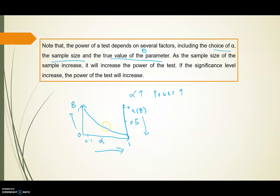If our alpha is increasing — say alpha is 0.9 — then the power of the test approaches 1, while beta gets smaller. But when beta, the probability of making a Type II error, approaches 1, the power of the test approaches 0. So the power of the test is again the probability of not making a Type II error. We will look at how to compute the power of the test in the next session. Thank you.